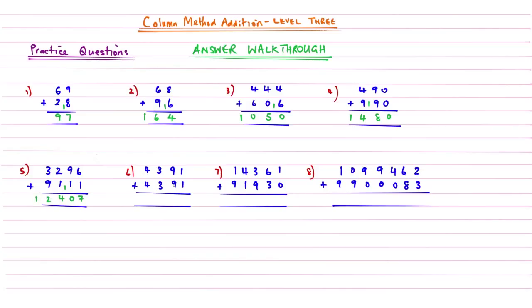Question 6: 1 add 1 is 2. 9 add 9 is 18 — carry the 1. 3 add 3 is 6, add the 1 gives me 7. And then 4 add 4 is 8. So the answer is 8,782 for question 6.